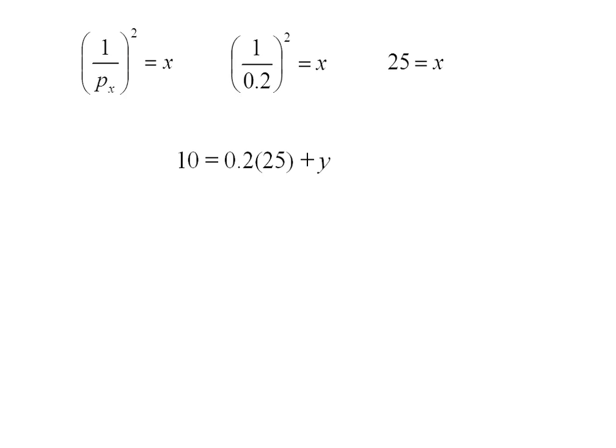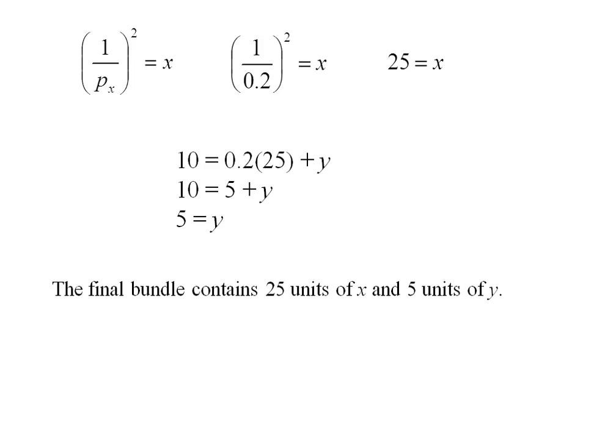putting in 20 cents instead of 50 cents for the price of x, leaving the price of y at one dollar. Working through I get 5 for y. So this bundle has 25 units of x and 5 units of y.